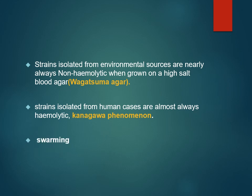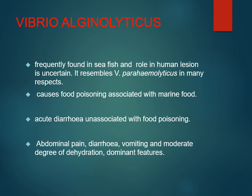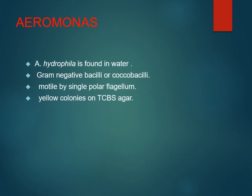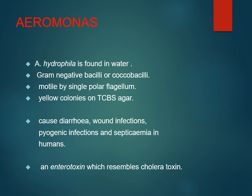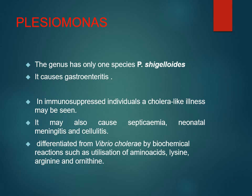Vibrio alginolyticus is another halophilic vibrio frequently found in sea fish; some food poisoning cases with acute diarrhea, abdominal pain, and vomiting have been associated with it. Aeromonas belongs to the Aeromonadaceae family — a gram-negative bacillus motile by polar flagellum — causing diarrhea, wound infection, and septicemia due to enterotoxin production. Plesiomonas has only a single species; initially within Vibrionaceae, it was later shifted to Enterobacteriaceae due to similar features, and causes gastroenteritis mainly in immunosuppressed individuals.